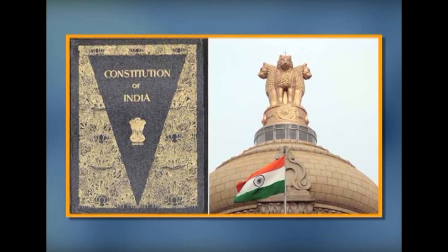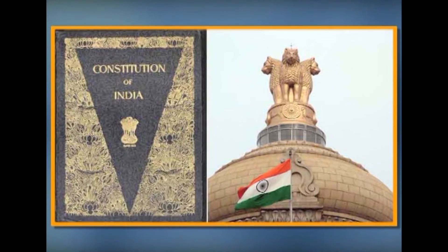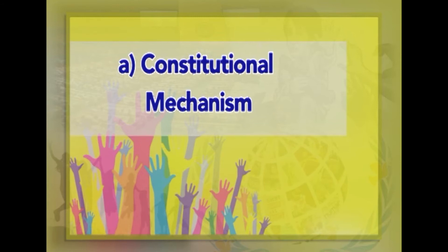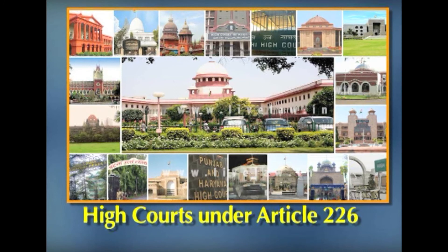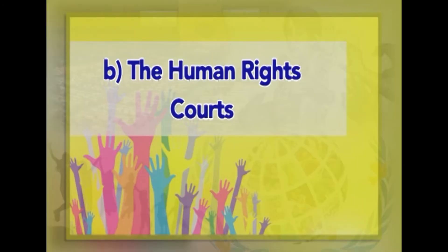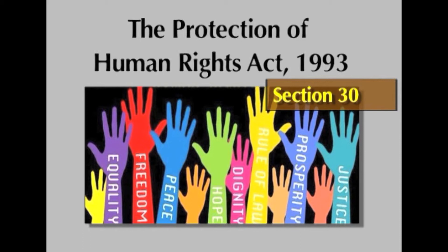Enforcement of Human Rights of Children in India. The Indian Constitution and legal framework provides for an effective mechanism for protection of human rights. This includes the writ jurisdiction of the Supreme Court under Article 32 of the Constitution and that of High Courts under Article 226. The Human Rights Courts established at the district level under Section 30 of the Protection of Human Rights Act 1993 for the purpose of providing speedy trial of offences arising out of violation of human rights can also be approached to protect the human rights of children.